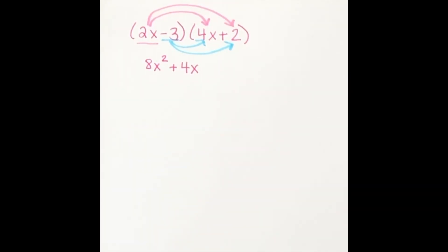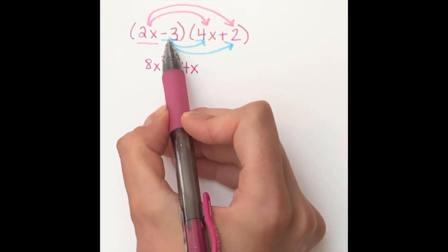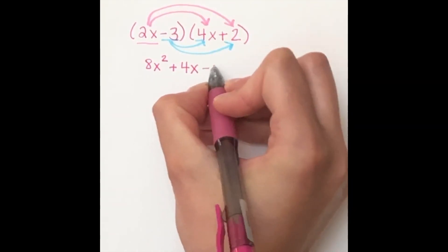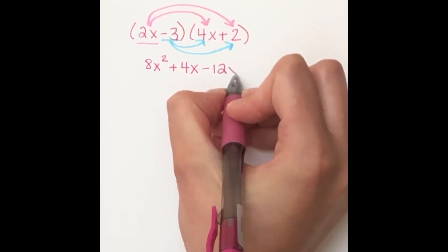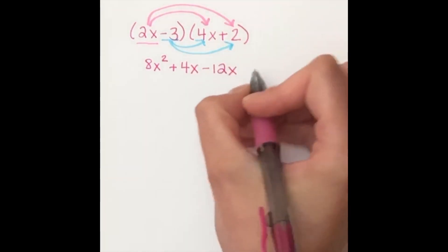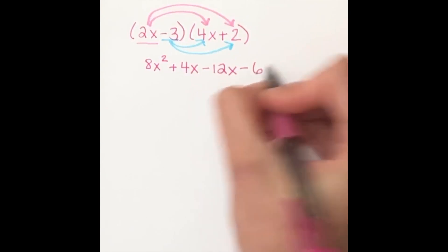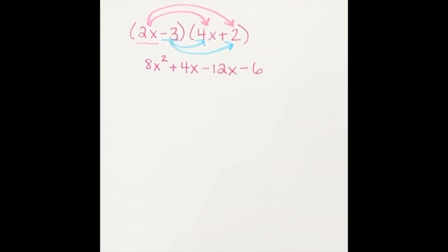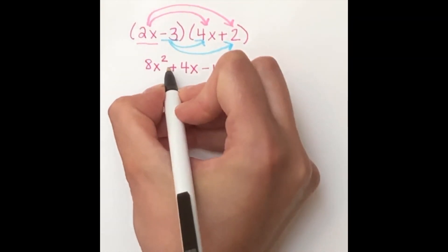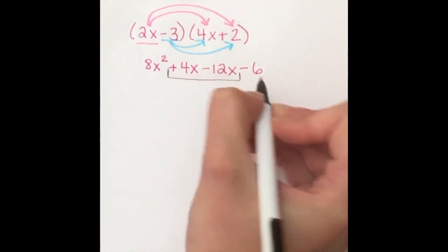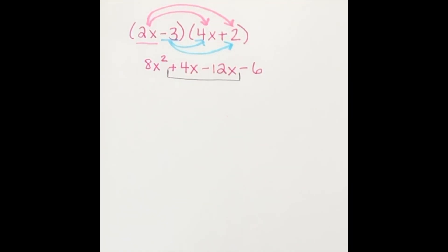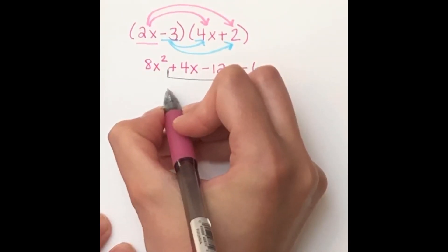When I do that, negative 3 times 4x is a negative 12x. Negative 3 times 2 is negative 6. All right, I did all of my multiplying. So now I need to see, are there any like terms that I can combine here? And there are. We can combine 4x minus 12x. What is 4x minus 12x? Yep, a negative 8x.